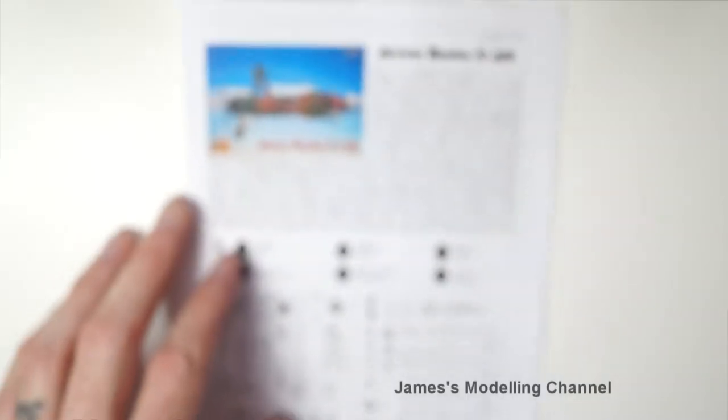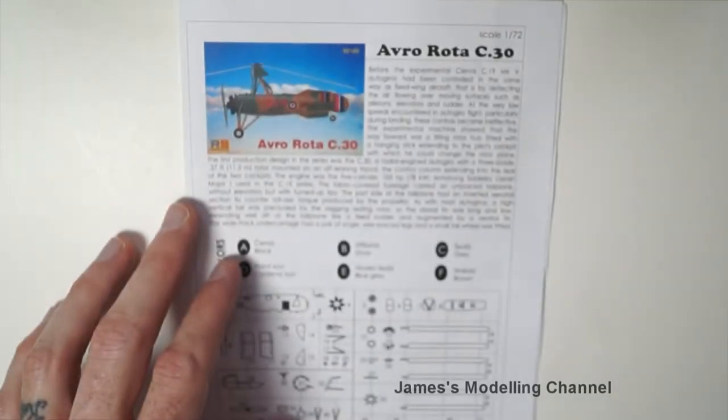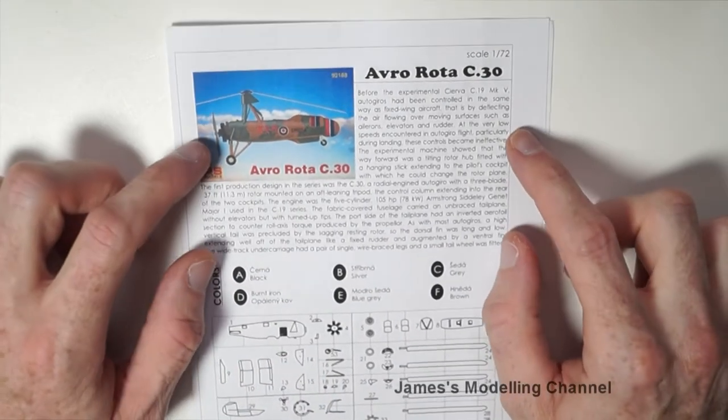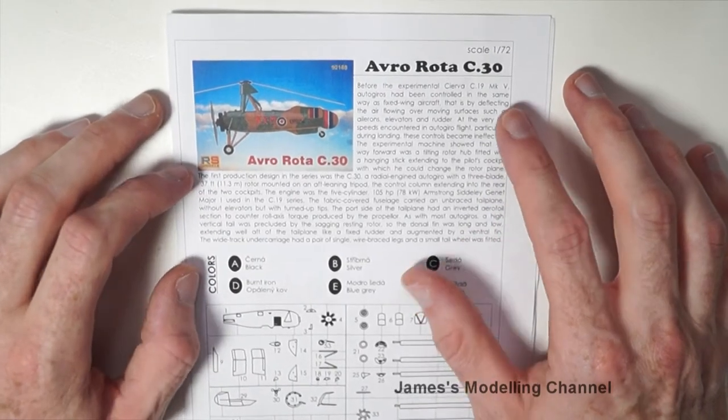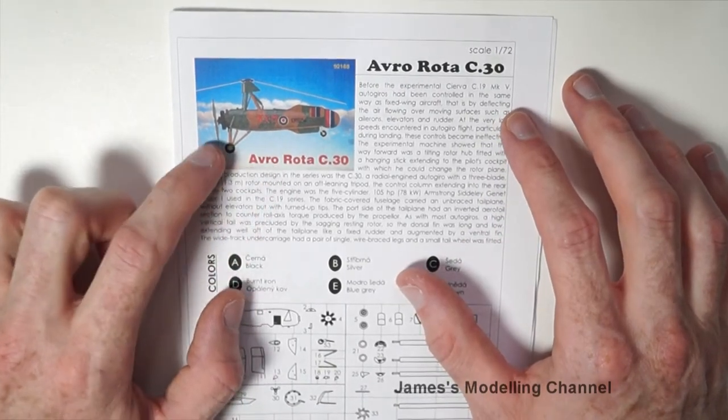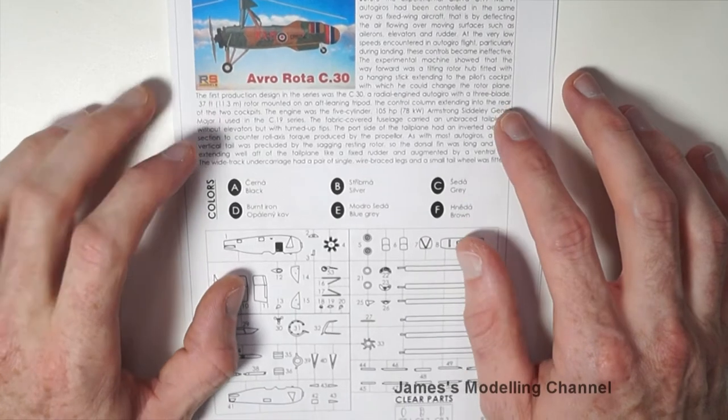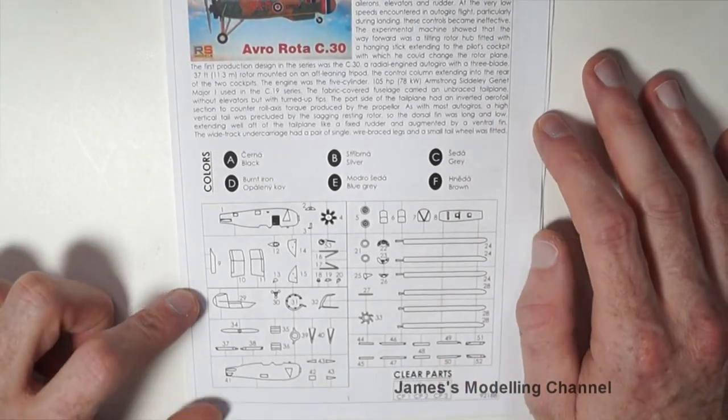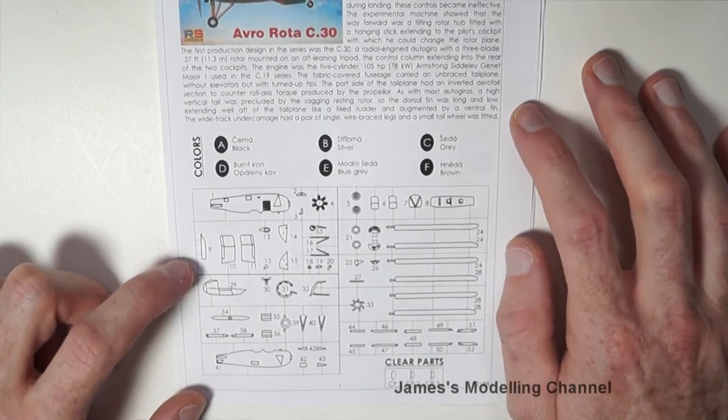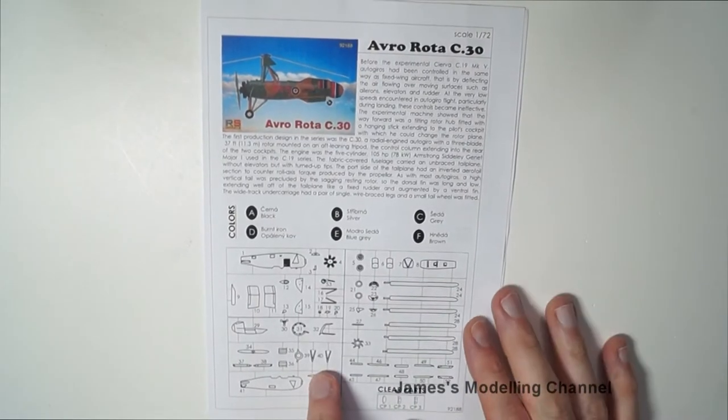And lastly, the instructions. On top there is some brief history of it, the picture of the box itself, some color suggestions, and the sprue plan down below here.